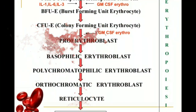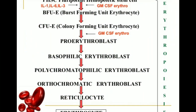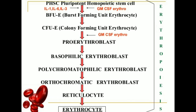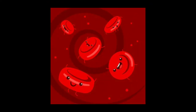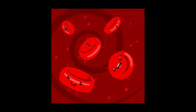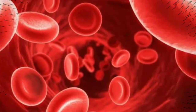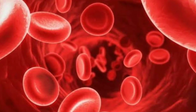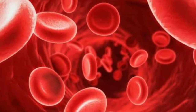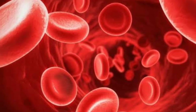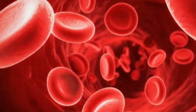Formation of hemoglobin begins in the proerythroblast and continues even into the reticulocyte stage of RBC. Therefore, when reticulocytes leave the bone marrow and pass into the bloodstream, as we saw in the last video, they form some amount of hemoglobin until they become mature erythrocytes.